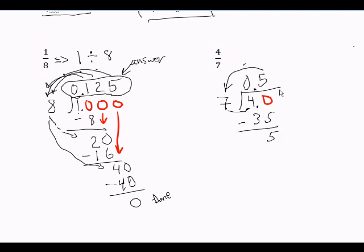Do another place value. Ask myself, how many times does 7 go into 50? 7 goes into 50 7 times. 7 times 7 is 49. Subtract, I get 1.